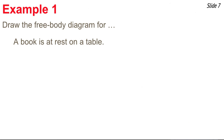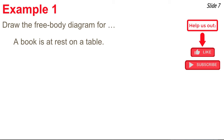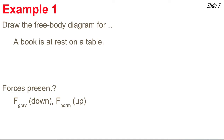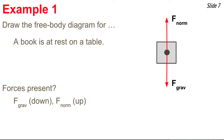Here's our first example: draw the free body diagram for a book at rest on a table. Gravity acts downward on the book. The book is also touching the table — they're pressed together — so the table pushes up on the book with a normal force. We draw a box with two arrows: one down for F-grav, and one up for F-norm. Since the object is at rest, these two forces balance each other, so the arrows are drawn to the same length.